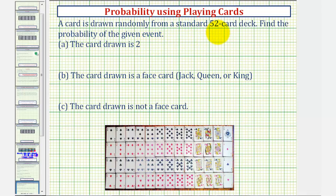A card is drawn randomly from a standard 52 card deck. Find the probability of the given event. And we have three probabilities to find.